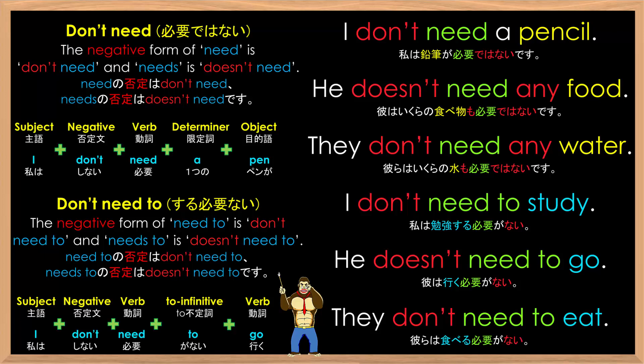Don't forget, you need to put the infinitive to between the word need and the verb. For example: I don't need to study. He doesn't need to go. They don't need to eat. You cannot say 'They don't need eat' — that sounds a little bit strange.